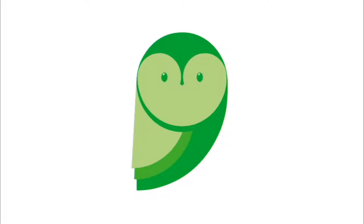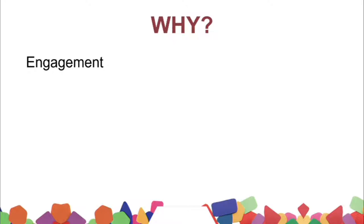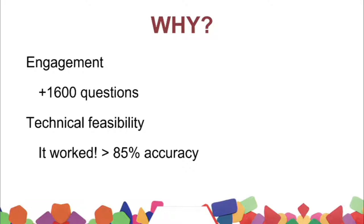This is Rudy in Messenger. You could ask him where the rooms are located — you could ask him more or less what he is asked today. Where is the cloakroom? Where will my next presentation be? So why did we do that? We had two objectives: one was to measure the engagement, to see whether people were attracted by this interaction with the bot, and the other was the technical feasibility, to check if it worked.